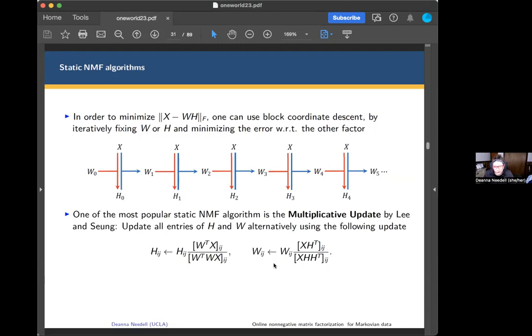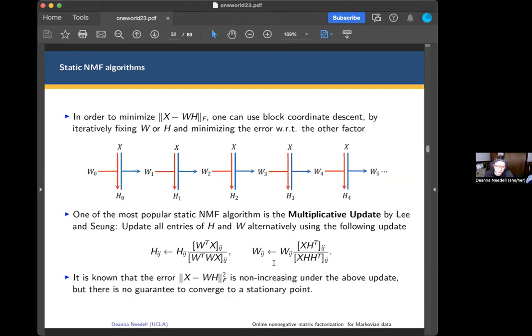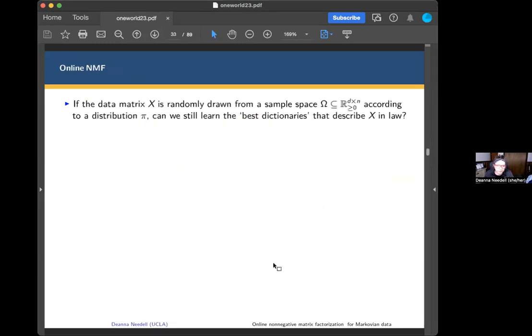What is known about this? It's known that the objective error is not increasing with this multiplicative update rule, but there is no guarantee to converge to a stationary point.